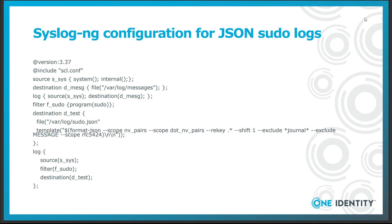The first log path in the following configuration collects log messages and stores them without any further processing or filtering into /var/log/messages. There is also a second log path which selects sudo logs, parses them using the JSON parser, and creates a JSON formatted message from the result. The JSON template function has a few exclusions to make the log messages shorter, so the message macro containing the original JSON payload and any journal macros are discarded.